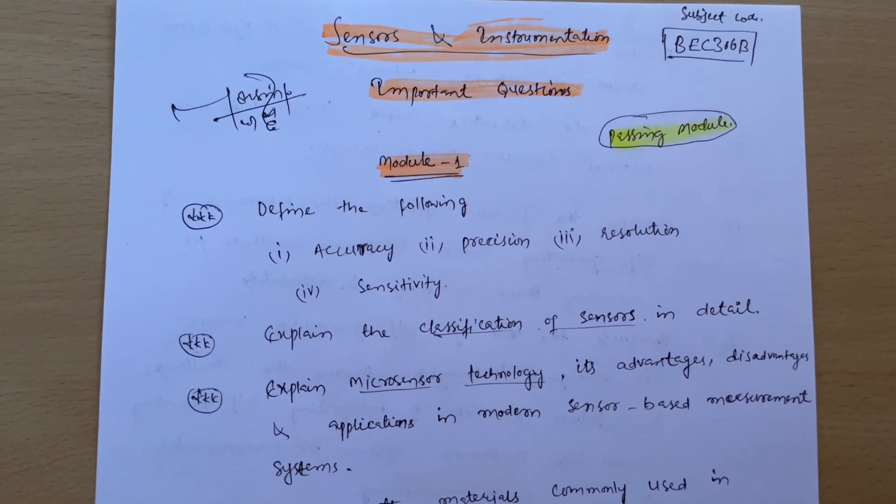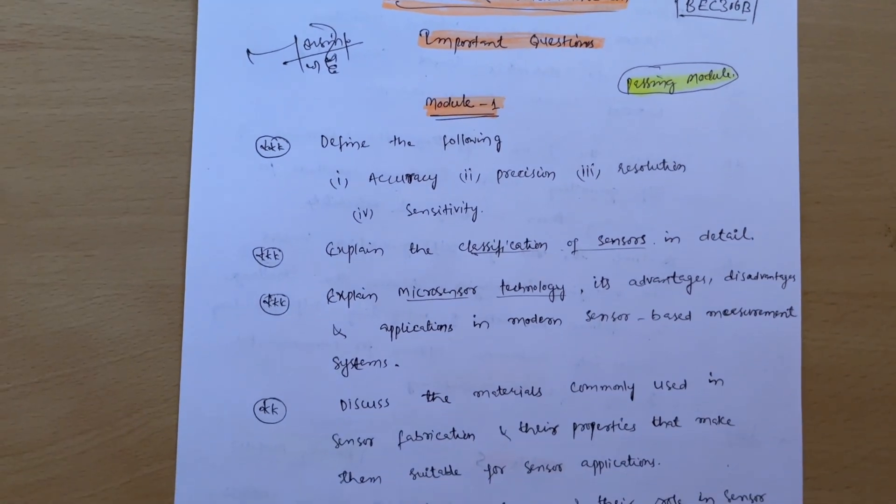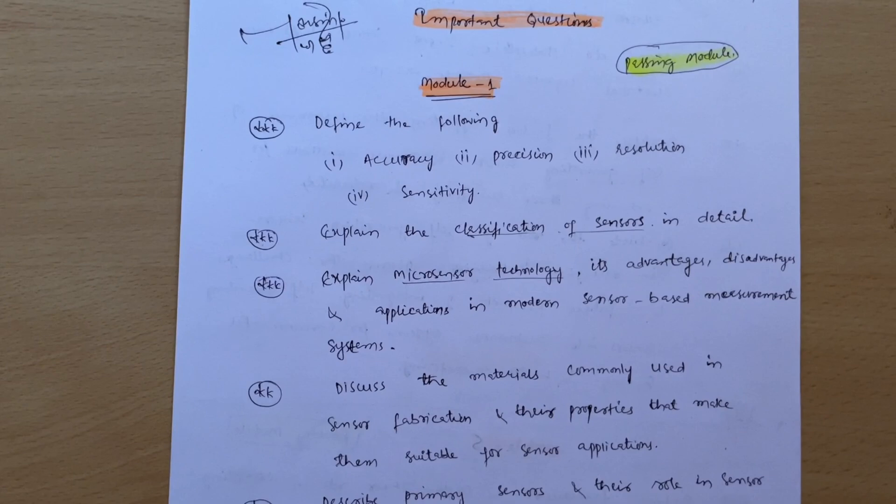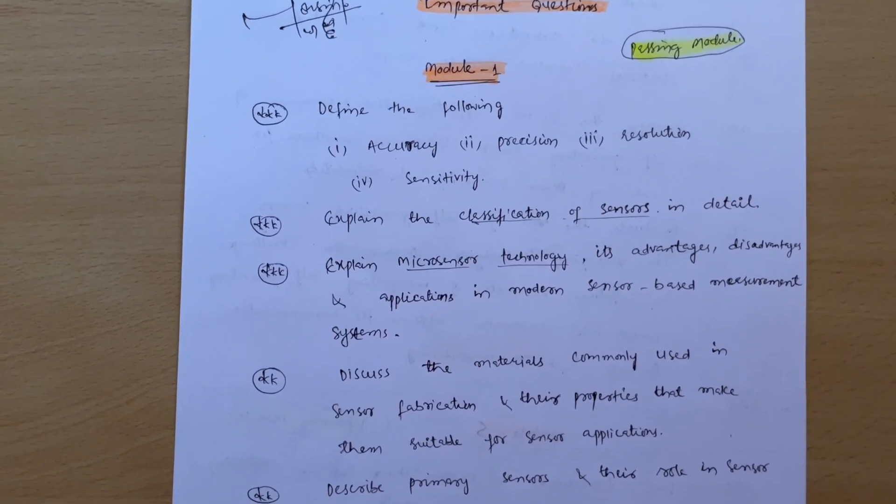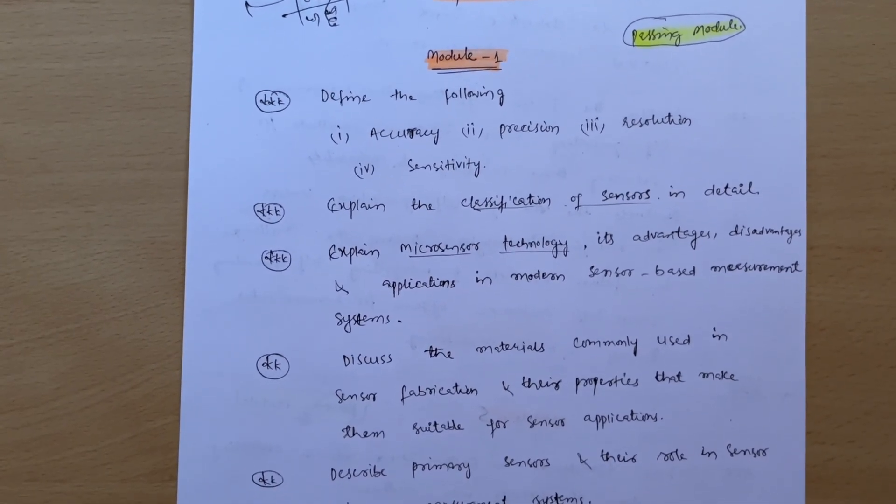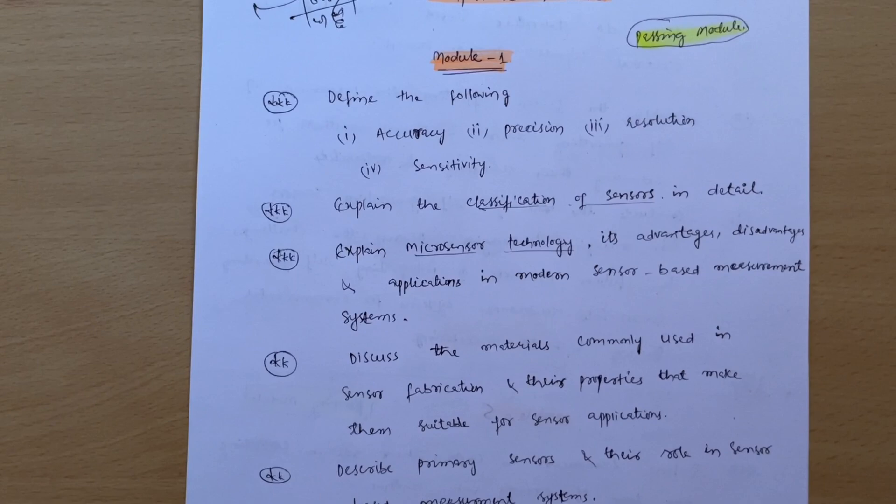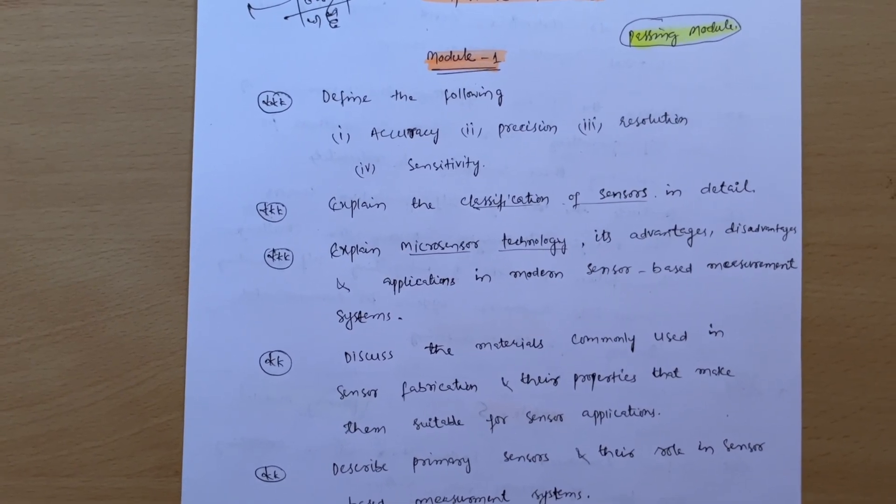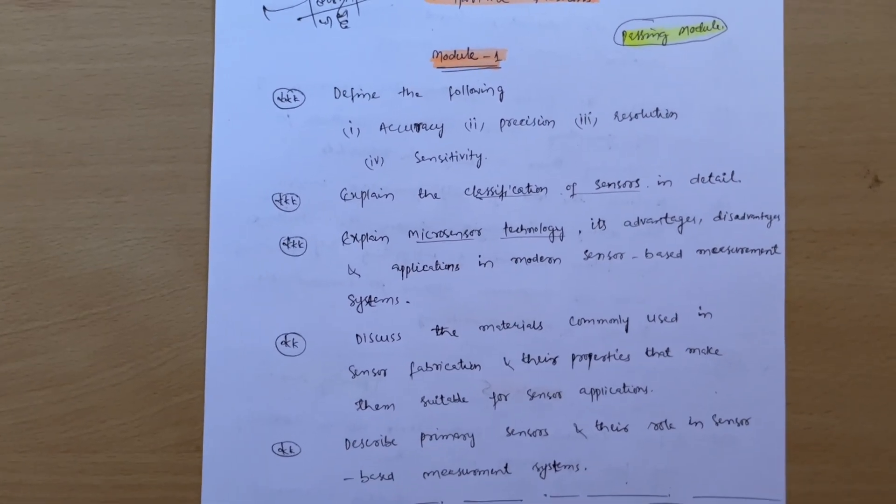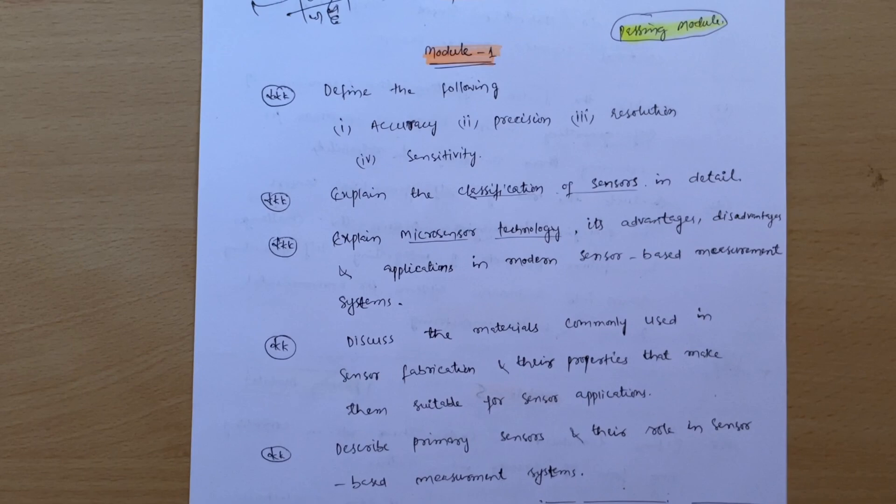Subject code is BEC306B. These are the important questions where there are a lot of diagrammatic parts, so your diagrammatic representation should be neat in the answer booklet. As it consists of five marks, you will definitely get five marks for the diagram, and the rest of the theory you can write in your own words by understanding the concepts.